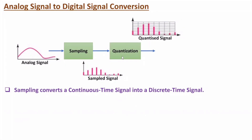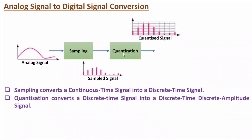In the second step, we perform quantization. By quantization, we convert the discrete time signal into a discrete time, discrete amplitude signal. You can observe the quantized signal has well-defined amplitude levels. In the sampled signal there can be any amplitude like 3.1, 4.1, or 4.5 — continuous amplitude. But after quantization, there will be well-defined discrete amplitudes.